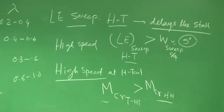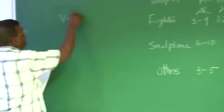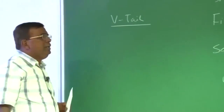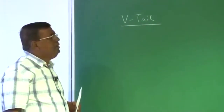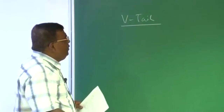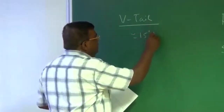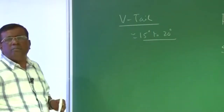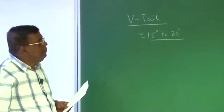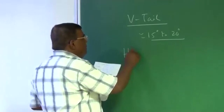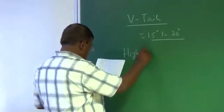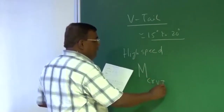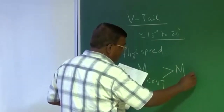Similarly for the vertical tail, there is no strict sweep requirement at low speed — you will find mostly around 15 to 20 degrees, primarily for aesthetic reasons. But for high speed, the same criterion applies: M-critical of the vertical tail must be greater than M-critical of the wing.